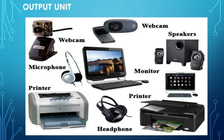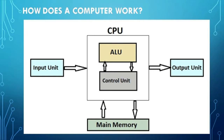Output Unit. This unit gives out the processed data, that is the result, in user-readable form. Some of the commonly used output devices are monitor, printer, speaker, plotter and projector. The result seen on the monitor is referred to as soft copy and the result obtained in printed form on a paper is referred to as hard copy. The working principle of computer can be explained with the help of a block diagram as the internal structure of the machine cannot be drawn. After receiving the data from the input unit, the processing is carried out by the subunits of CPU like arithmetic and logic unit, memory unit and control unit.